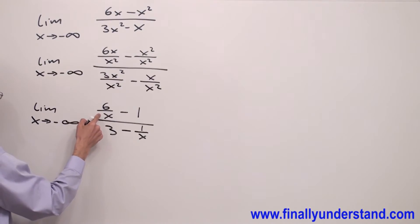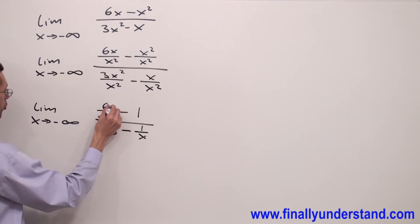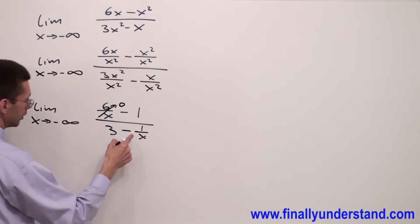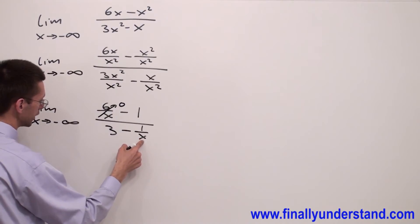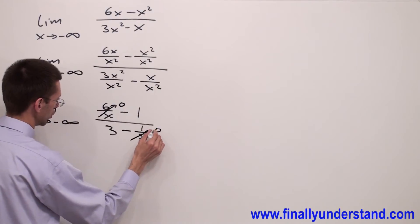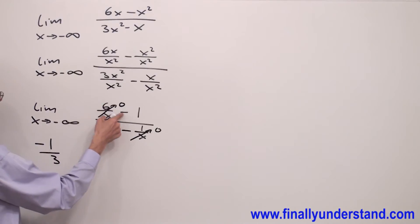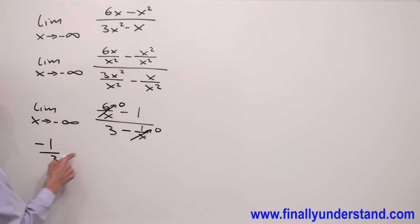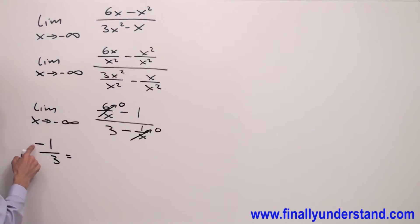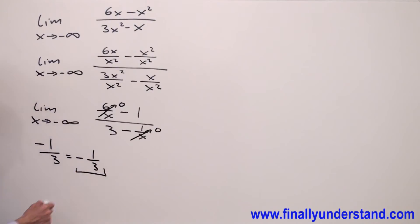6 over x is constant divided by x going to negative infinity, so this fraction approaches 0. Similarly, 1 divided by x approaches 0 as x approaches negative infinity. So we get 0 minus 1 over 3 minus 0, which gives negative 1 over 3. That is the solution.